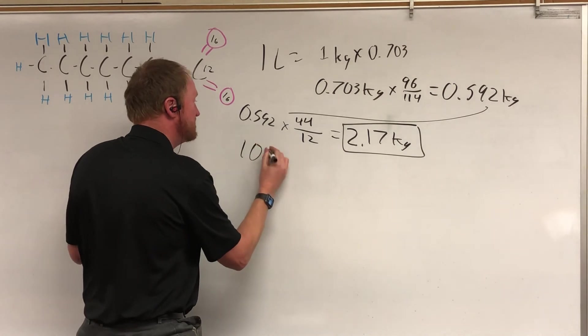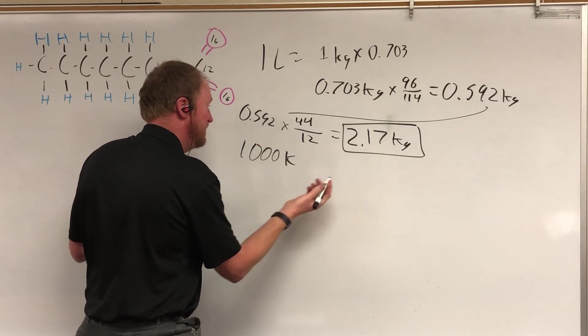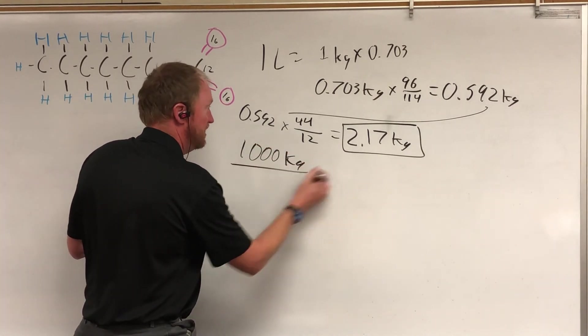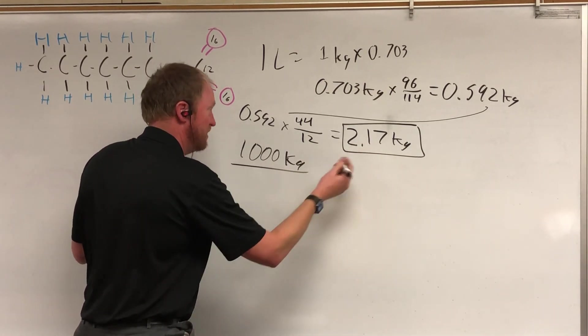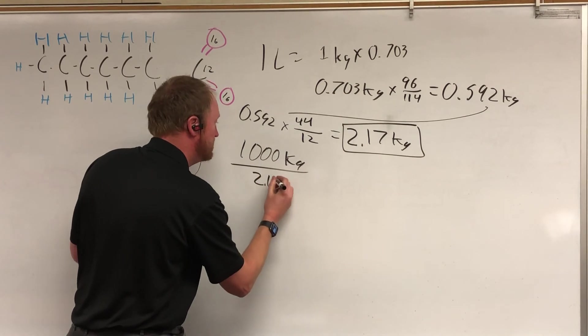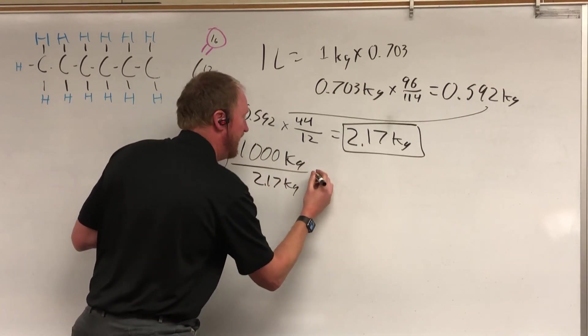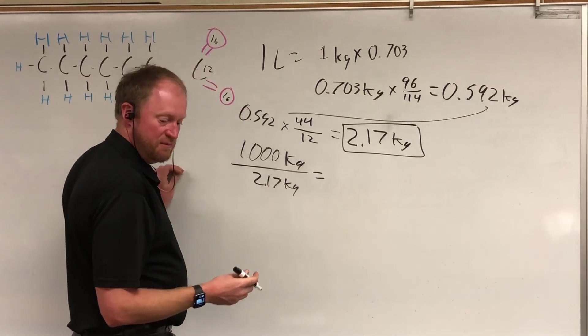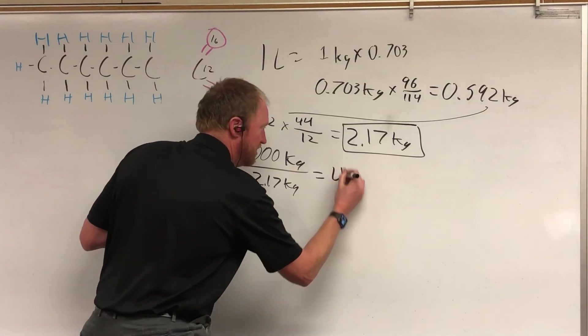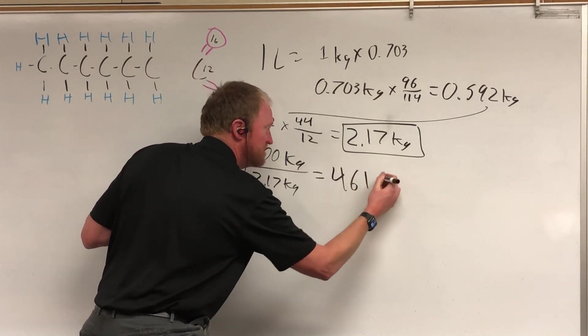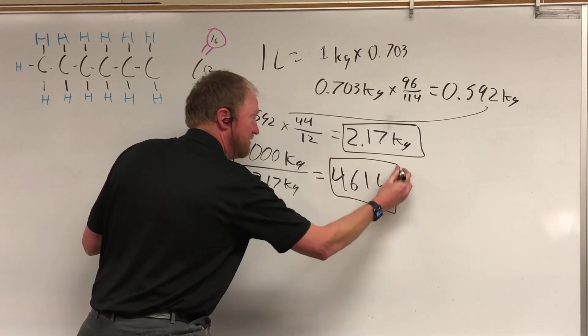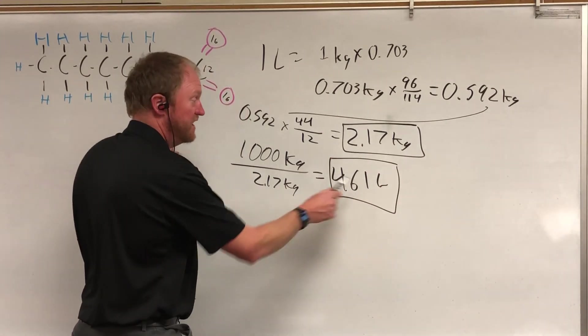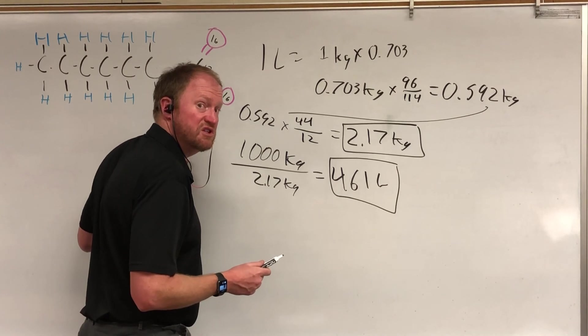So a metric ton is 1,000 kilograms. And if you want to know how many liters it takes to get 1,000 kilograms, well, you just divide that by 2.17 kilograms. And you're going to find that you end up with roughly 461 liters. That's the amount of gasoline that you need to burn to produce a ton of CO2.